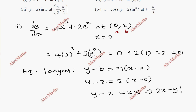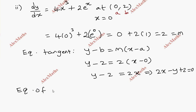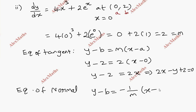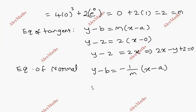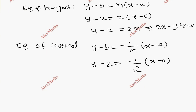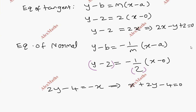So 2x minus y plus 2 equal to 0. Now the equation of normal: y minus b equal to minus 1 by m into x minus a. So y minus 2 equal to minus 1 by 2 into x minus 0. Multiplying through: 2y minus 4 equal to minus x. So x plus 2y minus 4 equal to 0. We get the equation of tangent and normal for subdivision 2.